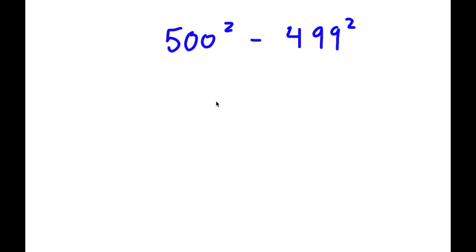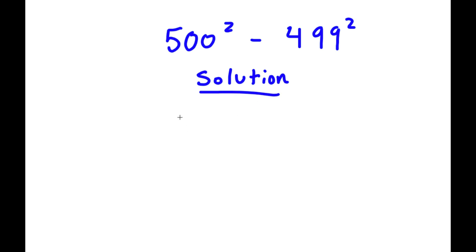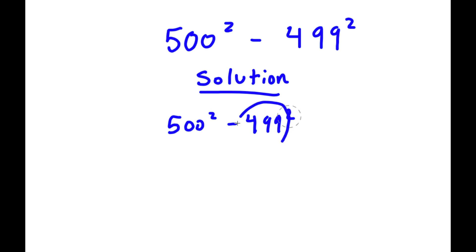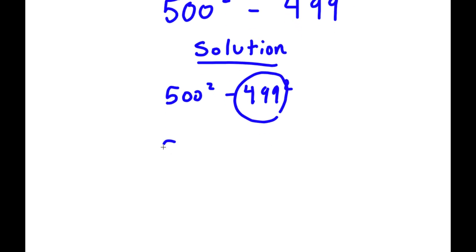In this problem I have 500 squared minus 499 squared. For my solution, I start with 500 squared minus 499 squared and now I'm going to rewrite 499 as...